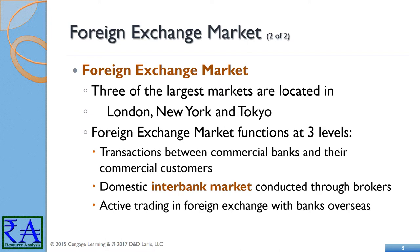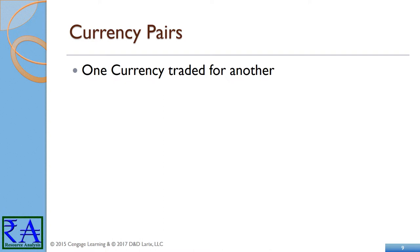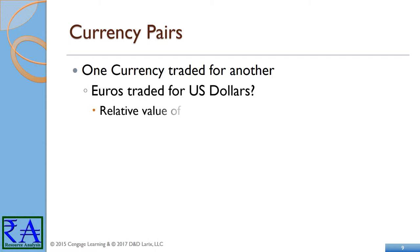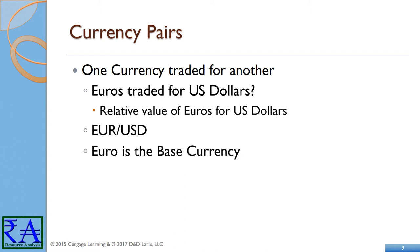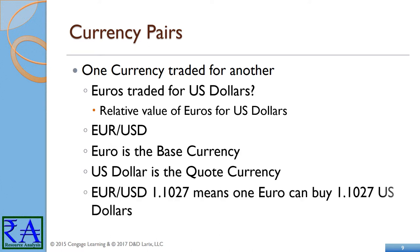In retail currency exchange markets, where small sums are exchanged, a different buying rate and selling rate will be quoted by money dealers. Most trades are to or from the local currency. The buying rate is the rate at which money dealers will buy foreign currency, and the selling rate is the rate at which they will sell. The quoted rates incorporate an allowance for dealer's margin — their profit and risk expense allowance. Transactions reference currency pairs, such as Euros exchanged for US Dollars, making the pair EUR/USD the widely traded pair.